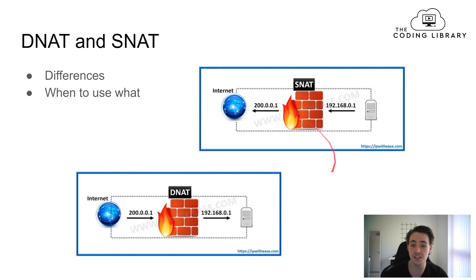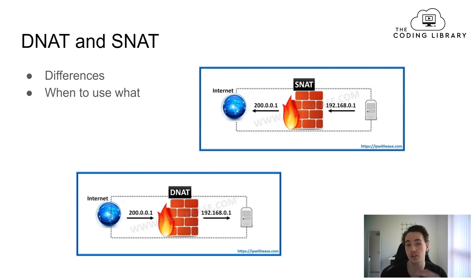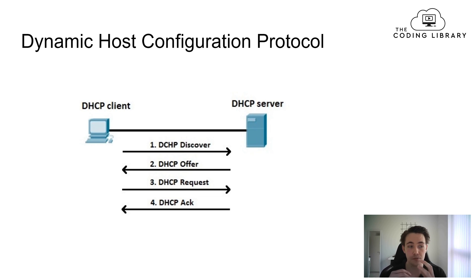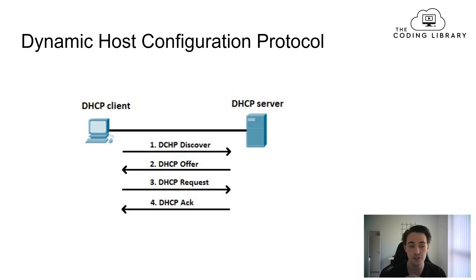The difference between SNAT and DNAT is just which direction you're going — whether you want to talk to the internet from an inside computer, or access a web server from the outside. We also have something called Dynamic Host Configuration Protocol, or DHCP. This is used when we want to get an IP address so we're able to go on the internet and communicate with others.